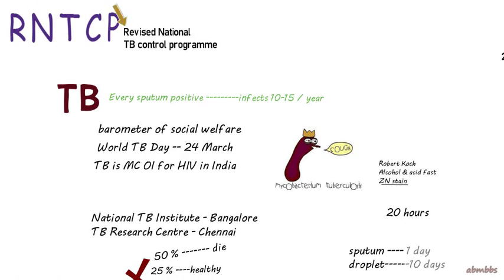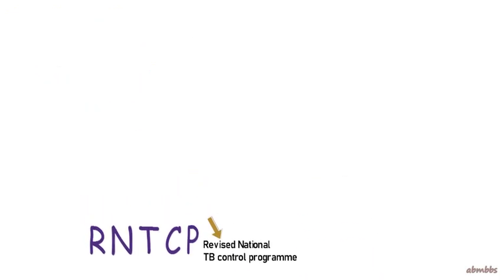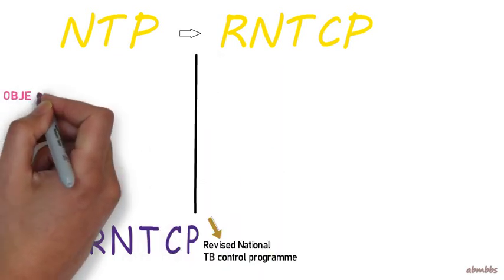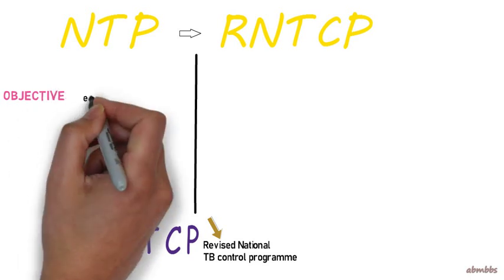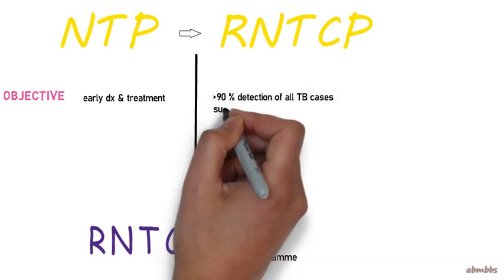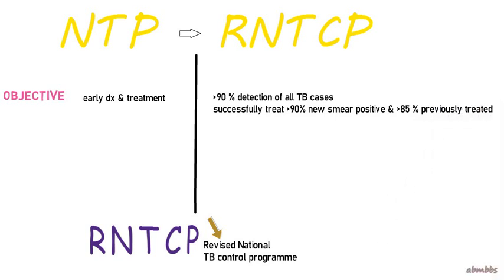You must be wondering why RNTCP starts with 'revised.' The earlier program was called the National TB Program, which was subsequently changed to the Revised National Tuberculosis Control Program. The National TB Program had the objective of early diagnosis and treatment of all TB cases in India, but that was practically difficult to achieve. RNTCP had a much more realistic objective: successfully detecting 90% of all incident TB cases and successfully treating 90% of all smear positive and 85% of all previously treated cases — that is, the relapse and recurrence cases.